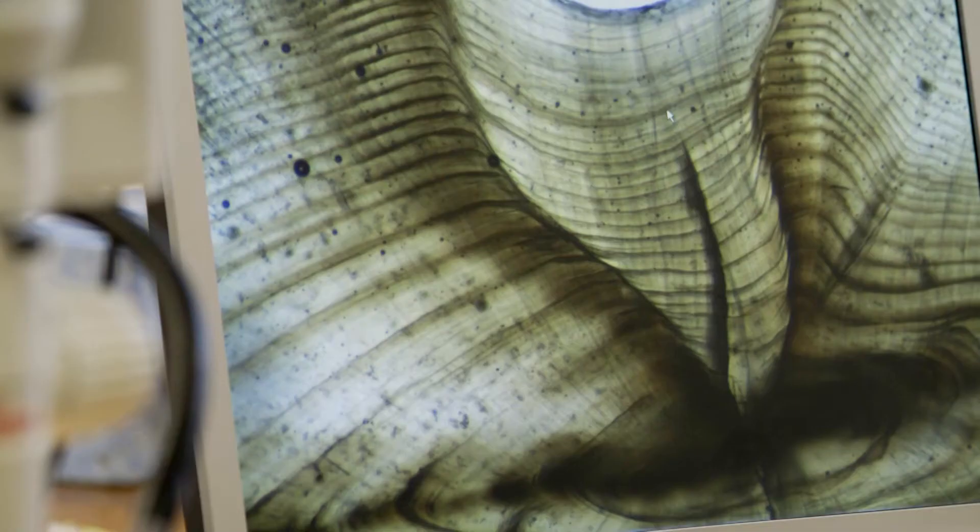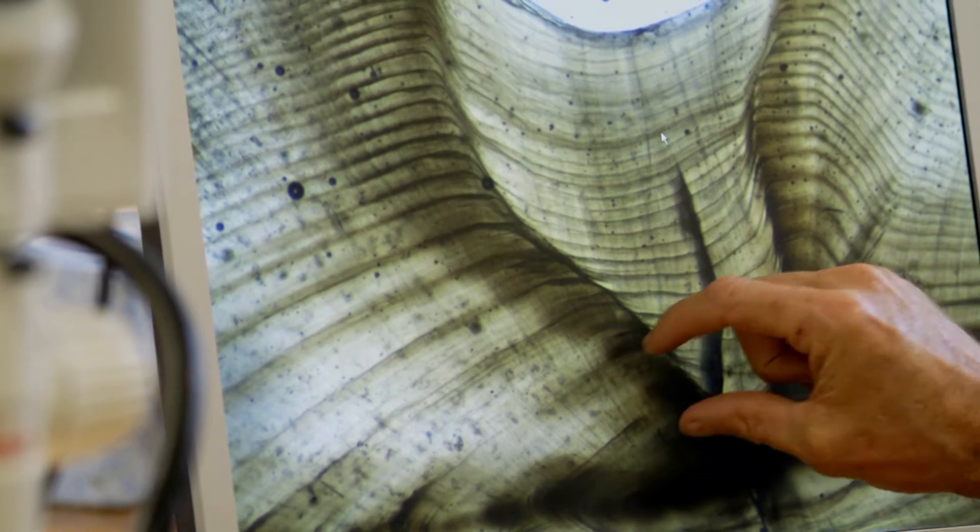Not only can we get the age of the fish, each of these rings, just like rings on a tree ring, has a specific width and that actually tells us how much a fish has grown in that particular year.